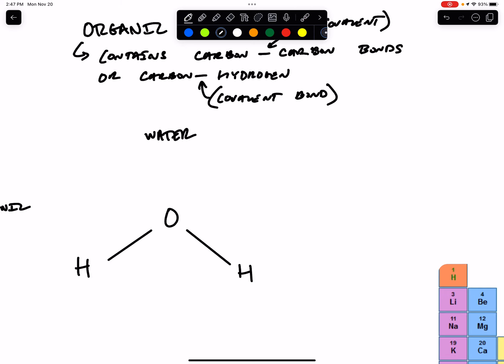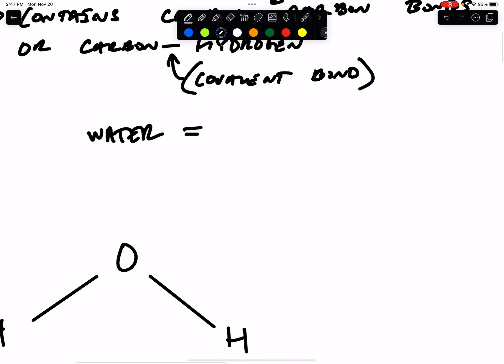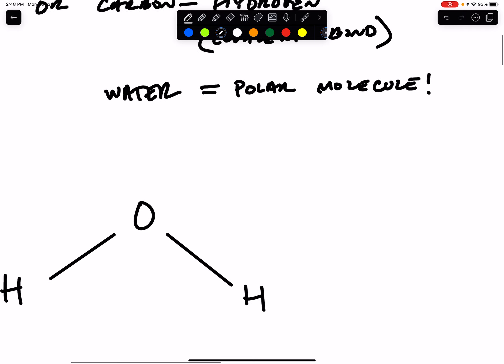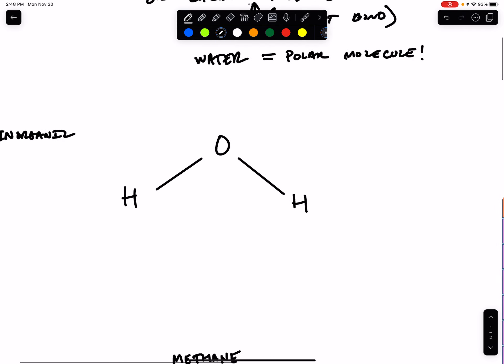Water is what we call a polar molecule. Water is polar because the two sides — or kind of the three sides — of the water molecule have different charges. These two lines connecting the hydrogen to the oxygen represent a covalent bond.